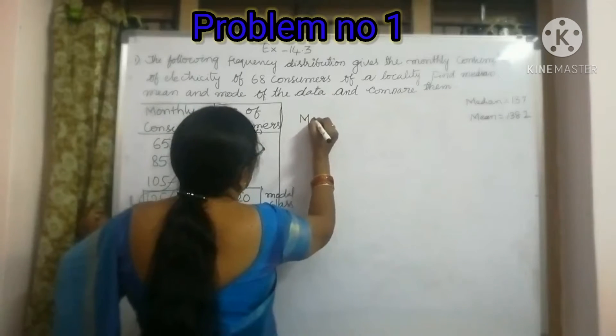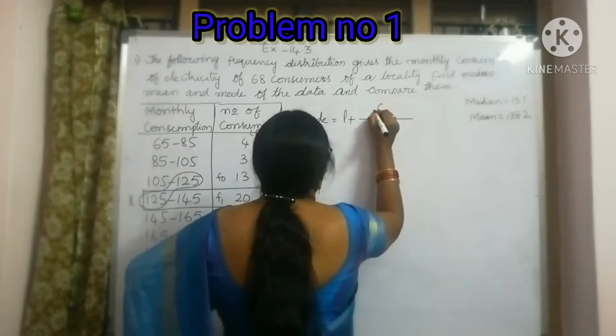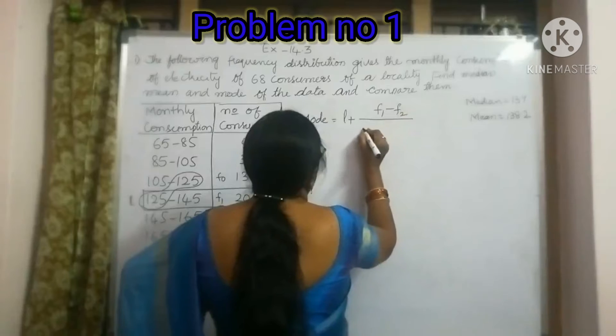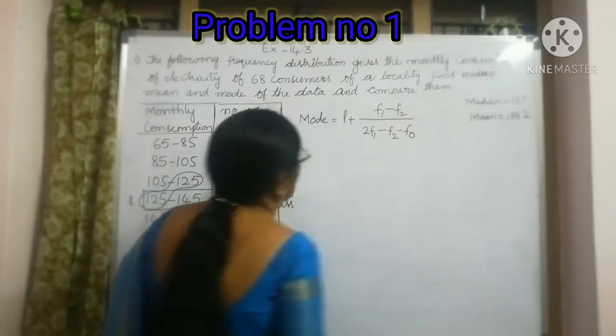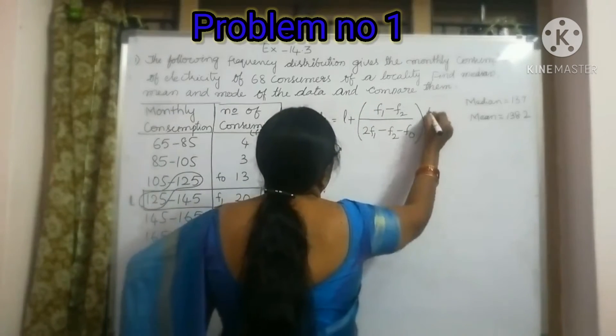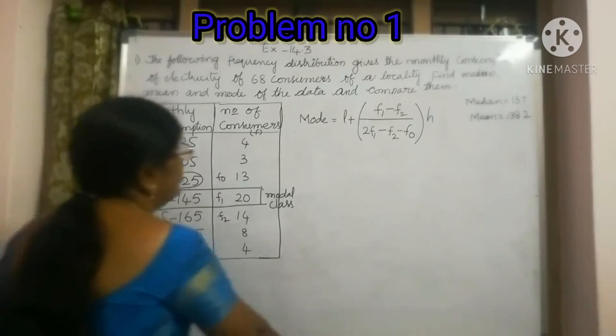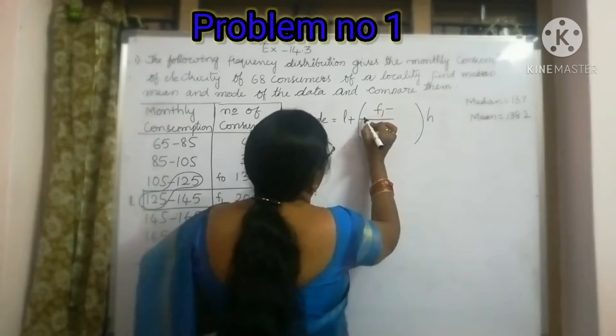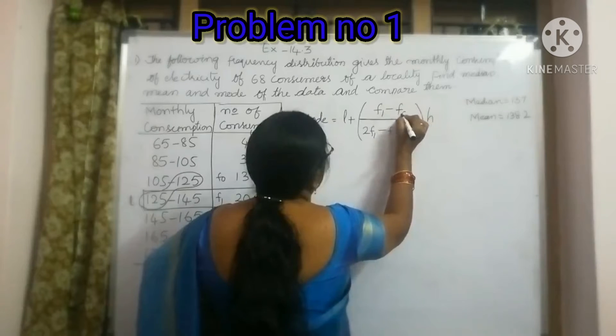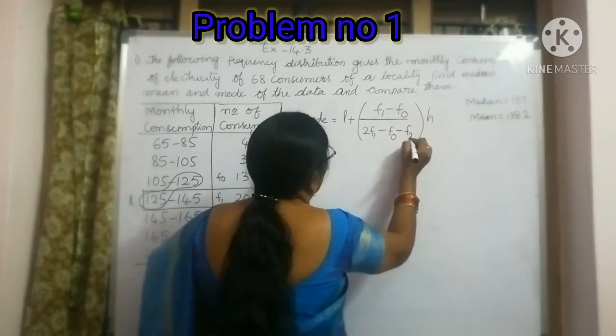Mode is equal to L plus F1 minus F0 by 2F1 minus F0 minus F2 into H. Now, we will write the formula for mode: F1 minus F0 by 2F1 minus F0 minus F2 into H.